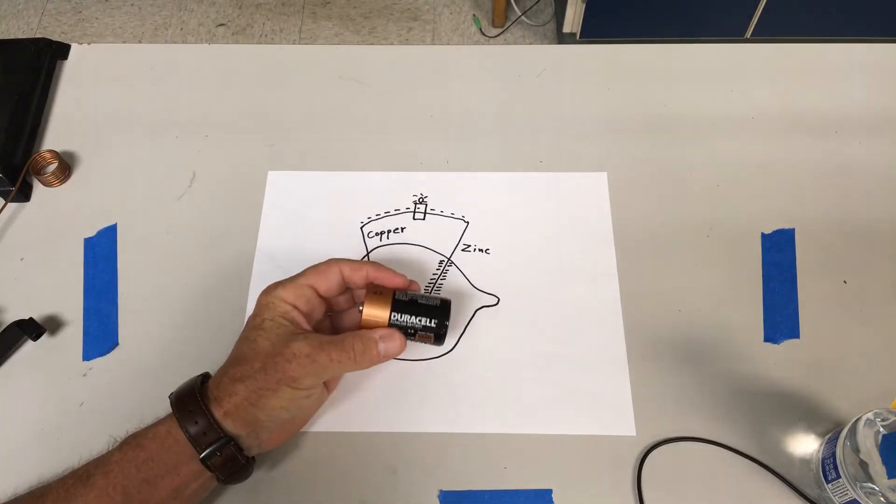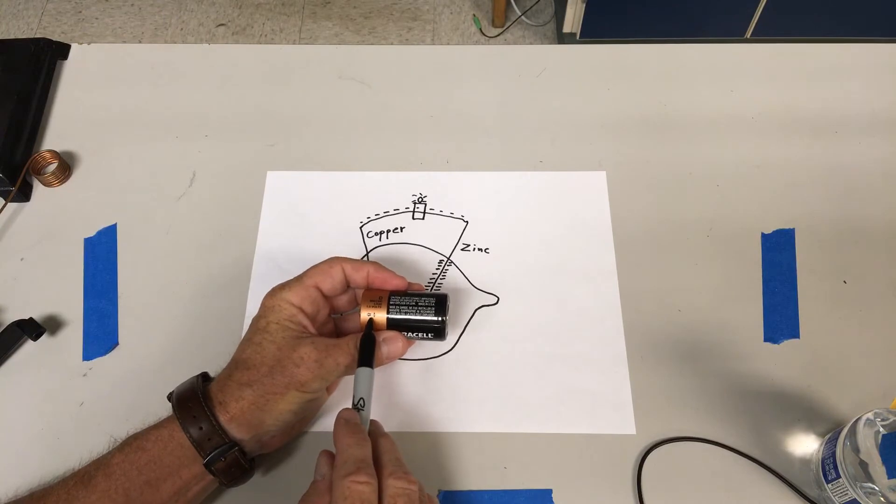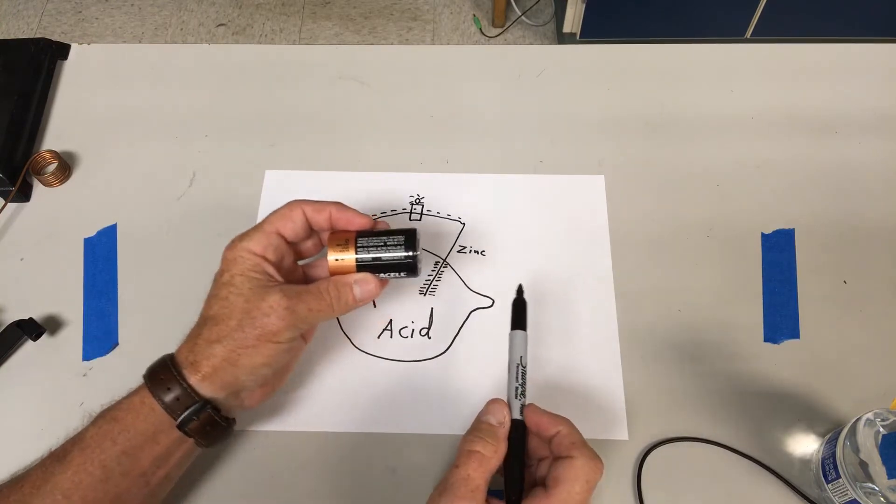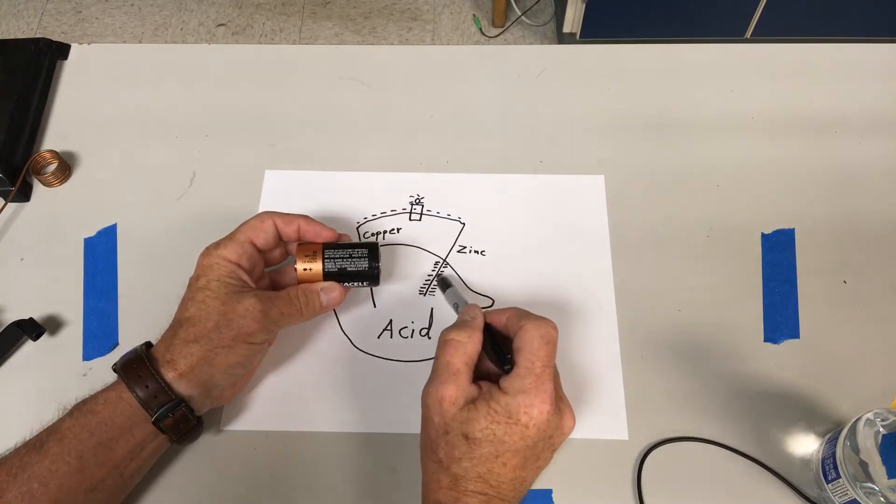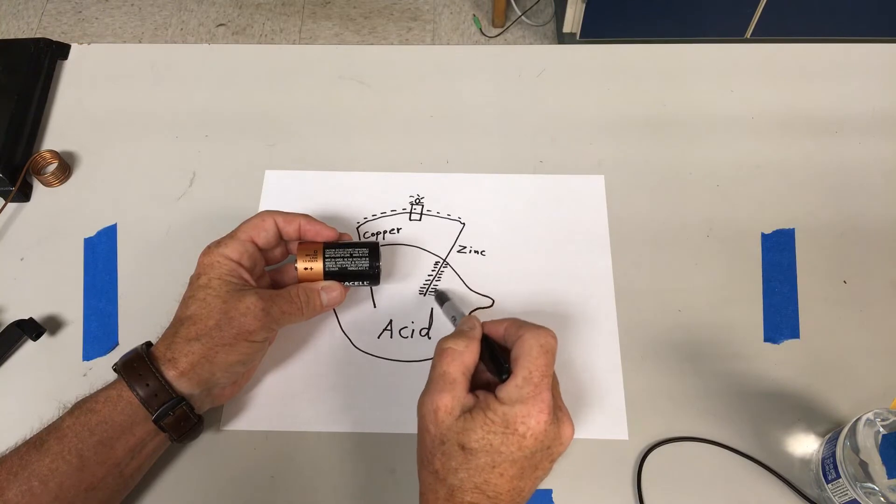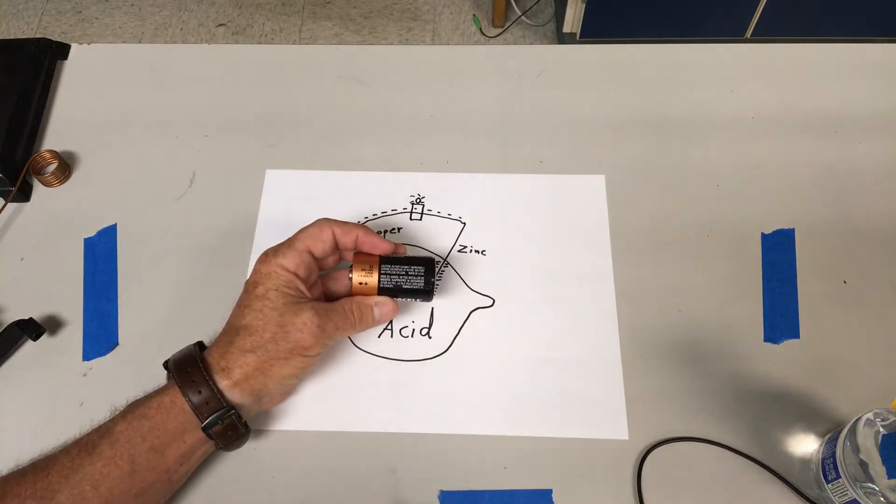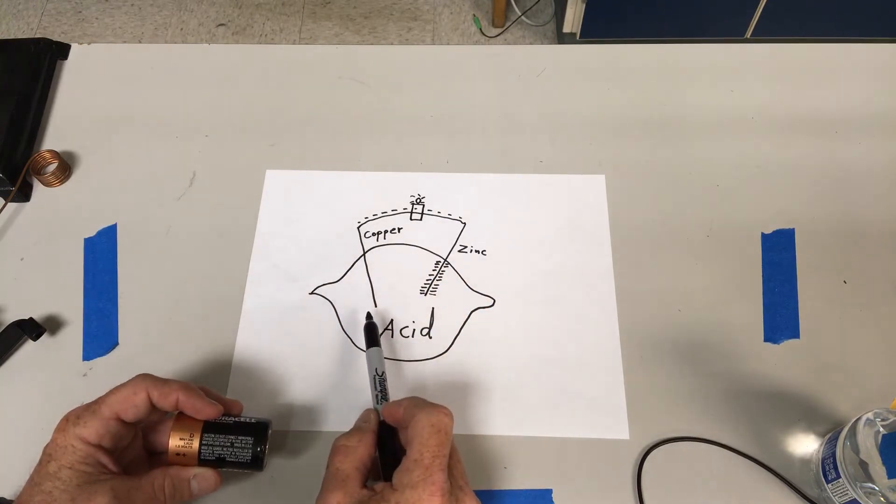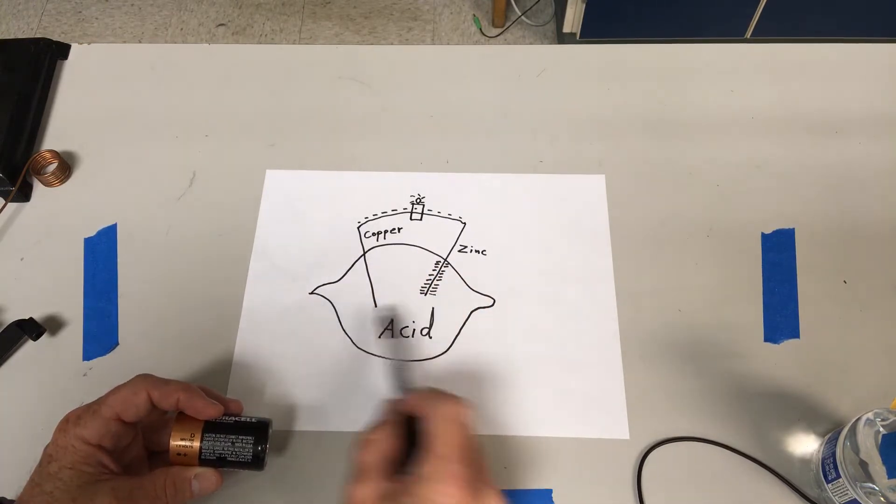You'll also notice on batteries that they've got a little plus sign on one side and a little negative on the other. Those basically mean this: the negative side of the battery, when your battery's new, you can think of as the spot on the battery that's got all these electrons packed together that don't want to be there. Well, eventually all these electrons find their way home and they don't want to move anymore.